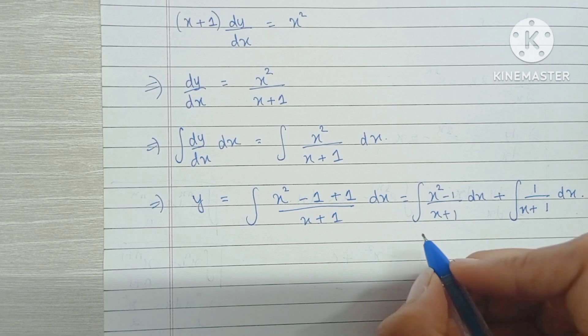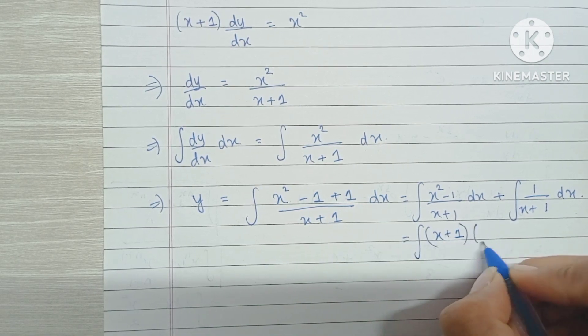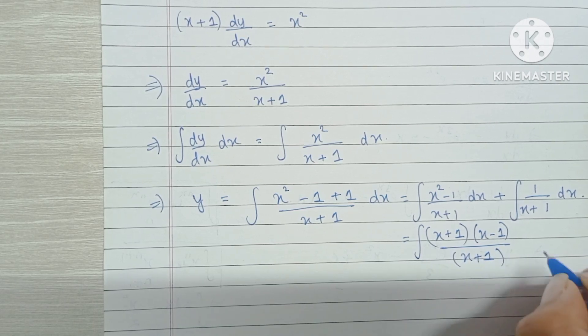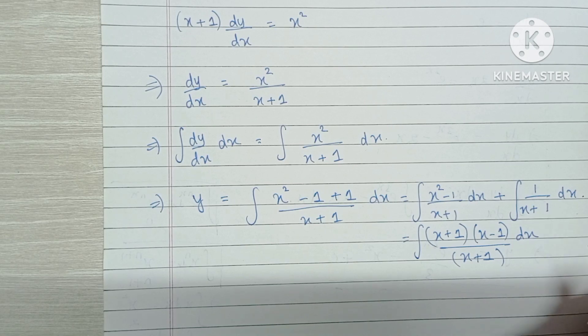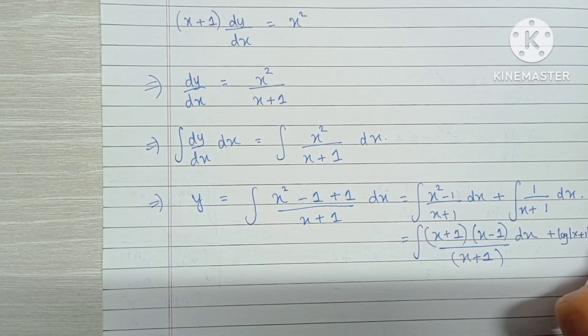Now x squared minus 1 can be written as x plus 1 into x minus 1 and in the denominator we have x plus 1. We know that the integral of 1 by x or 1 by x plus any constant is simply log mod of x plus the constant. So this becomes plus log mod of x plus 1.